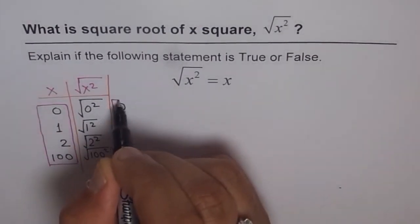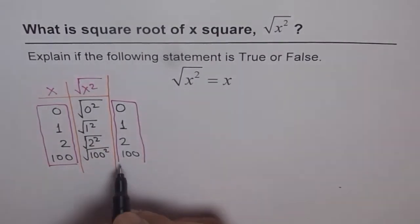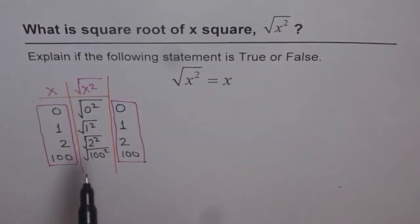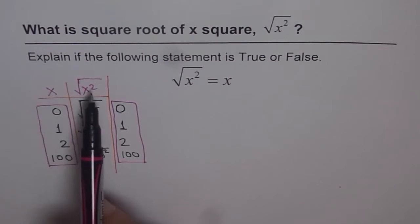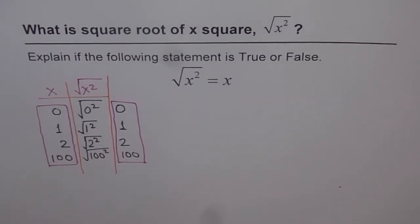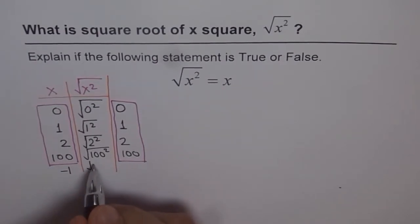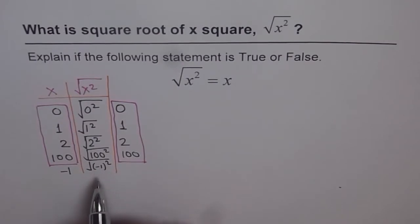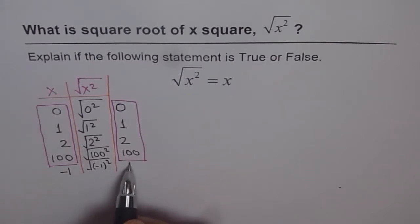So you can say that for all these values, what we have is like square root of x square is same as x, which we expected. Now, let me take some other example. And let's take example like minus 1. Now, minus 1. Let's do square of minus 1. Now, if I do square of minus 1, what do I get? I get 1 and the square root of minus 1 is actually 1.